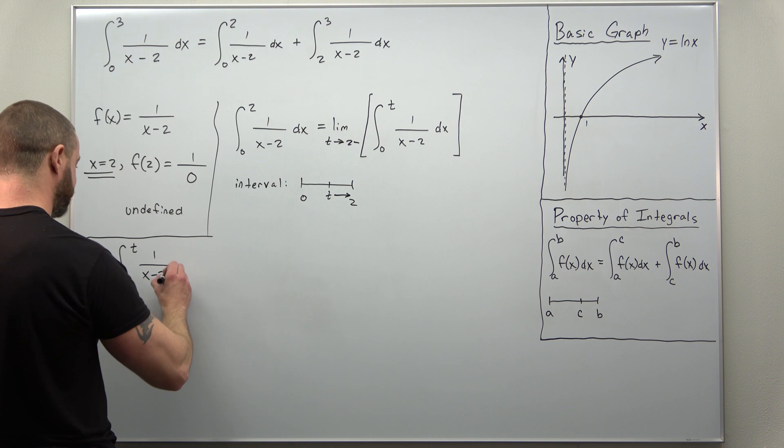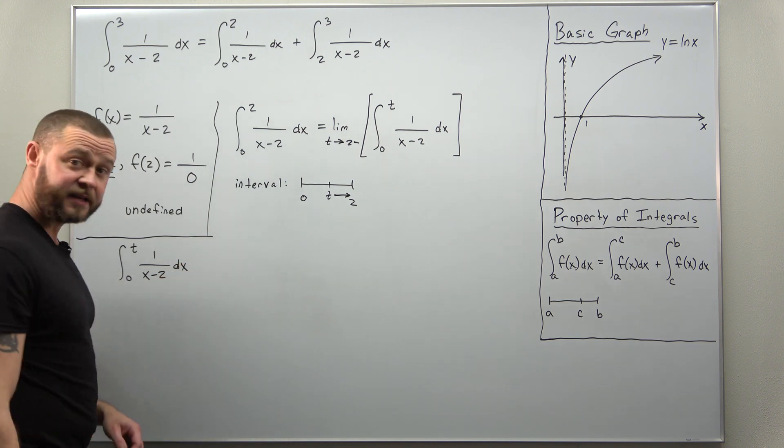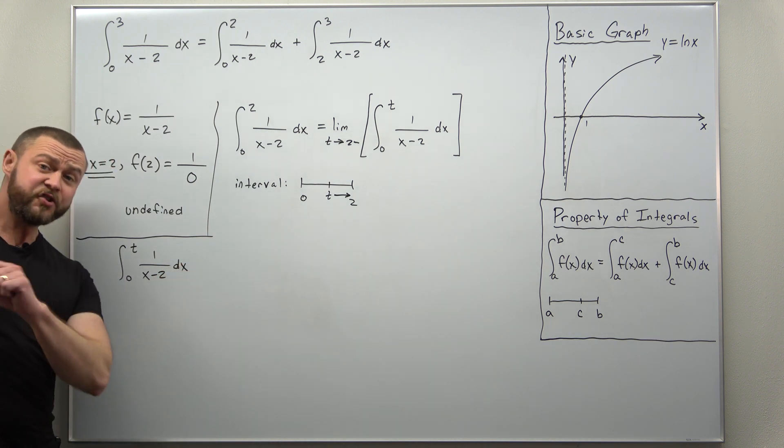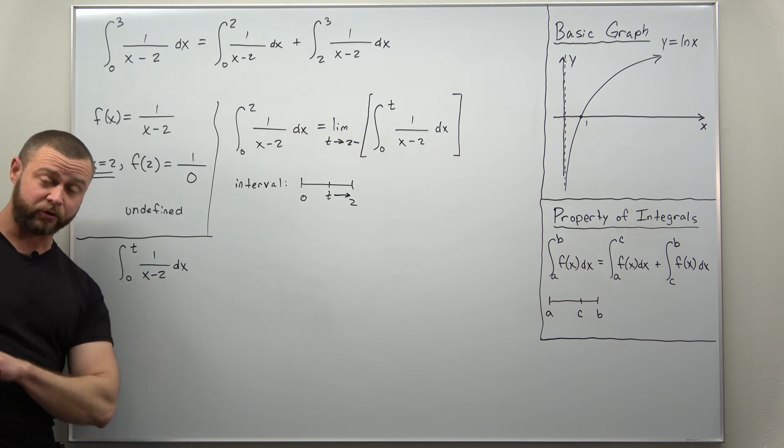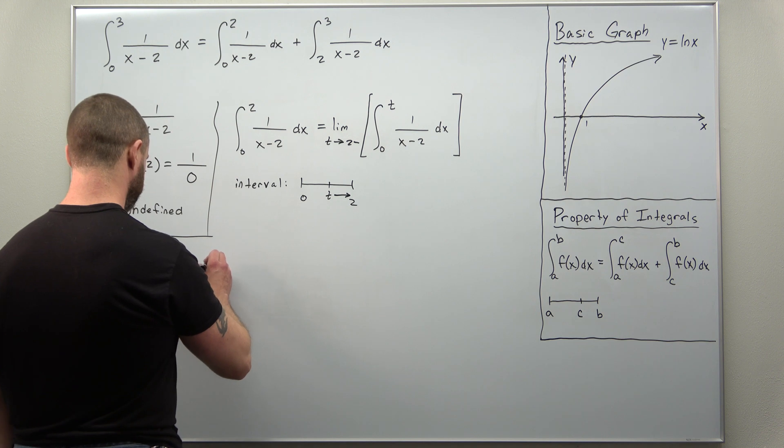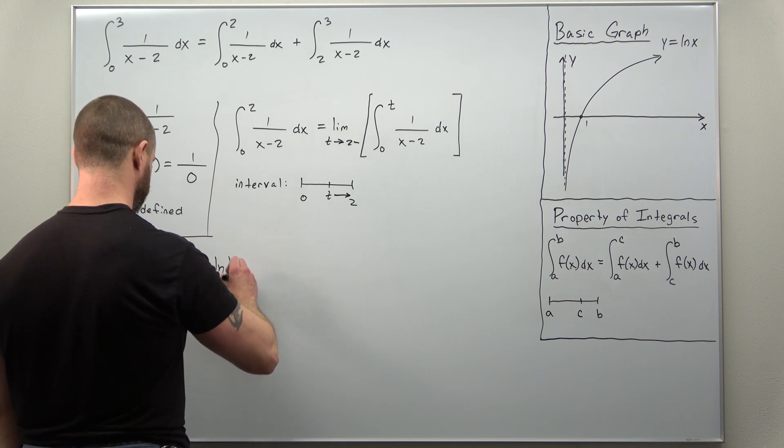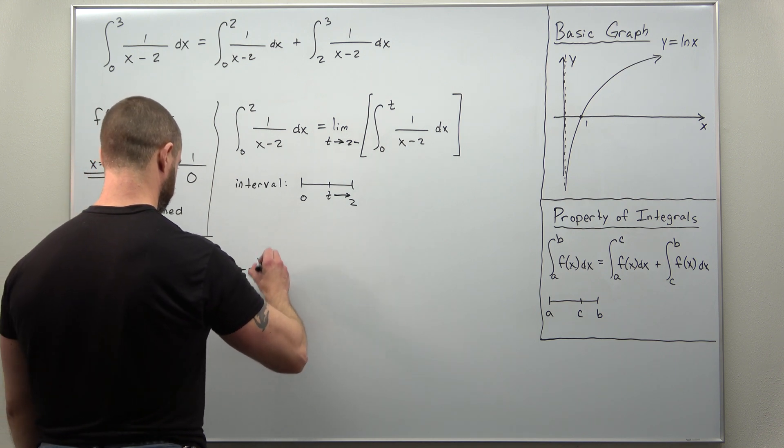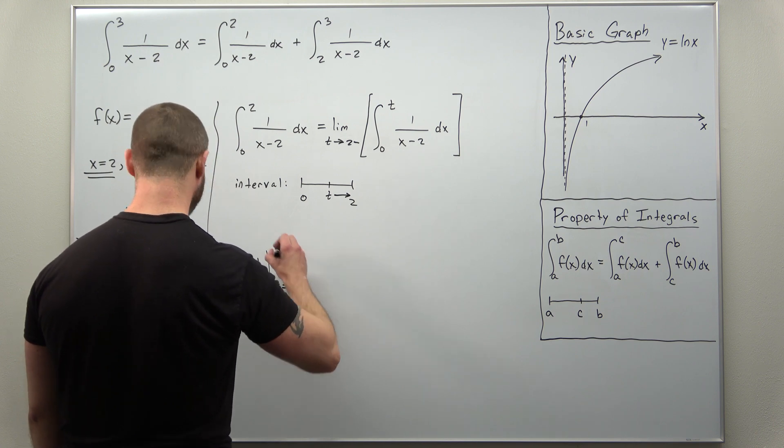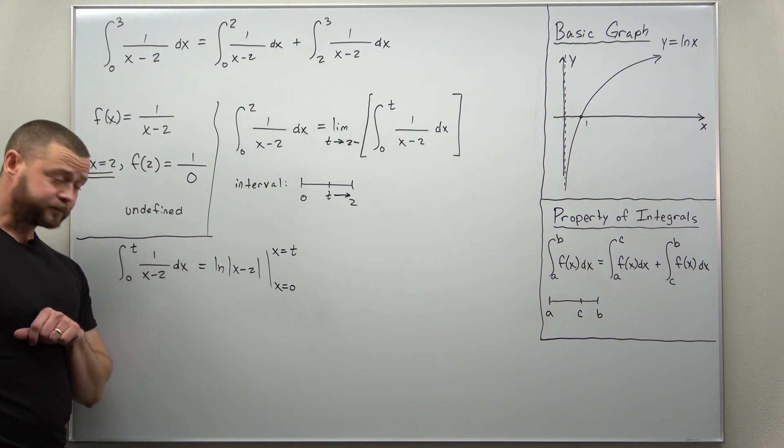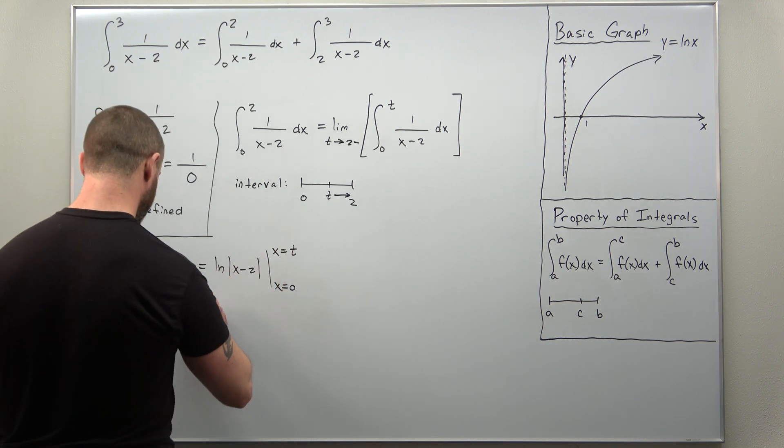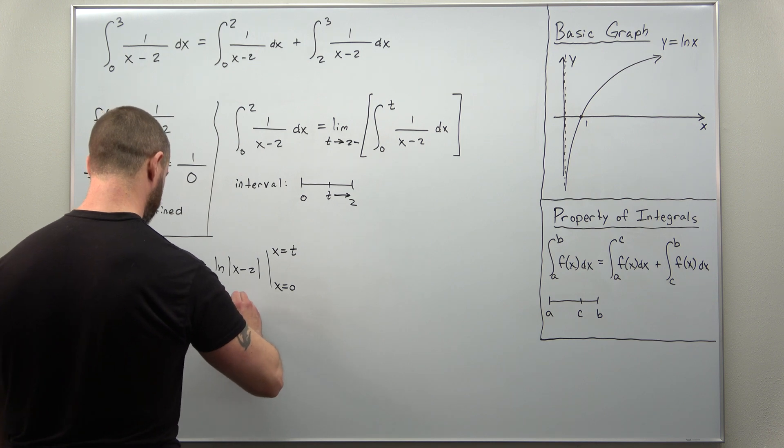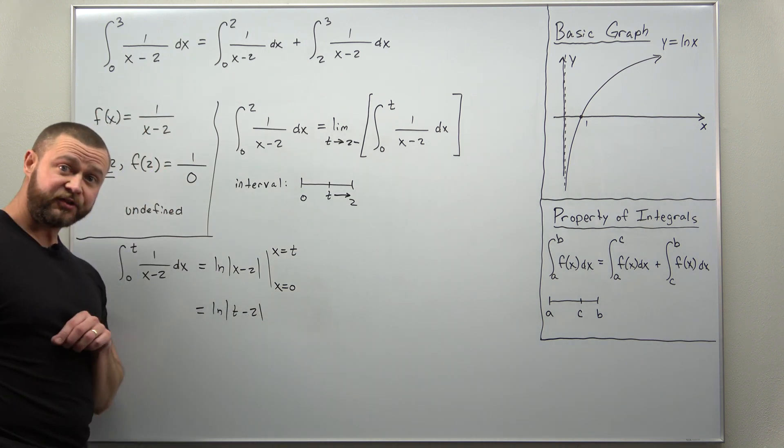Of 1 over x minus 2 dx. This you can probably integrate immediately, recognizing this as a natural log. Then we're going to apply the fundamental theorem of calculus, plugging in our limits, x equals 0 and t. So if you go ahead and do that, first plug in x is t, we get ln of t minus 2.